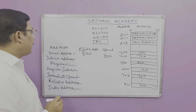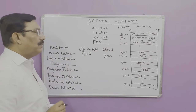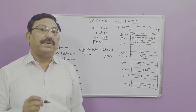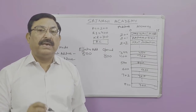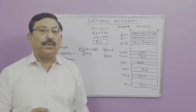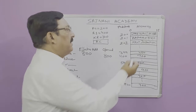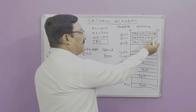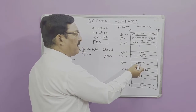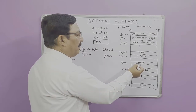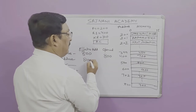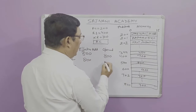In indirect addressing mode, the address mentioned in the instruction is the address of another address which contains the operand. So 500 points to another address, and at that address the operand is present. Therefore the effective address will be 800 and the operand will be 300.